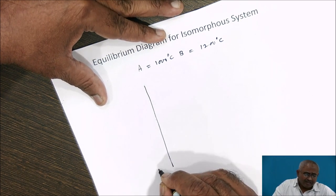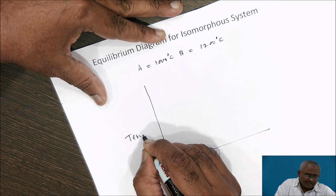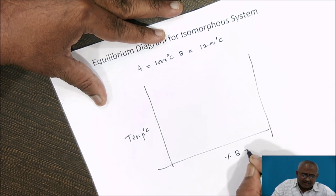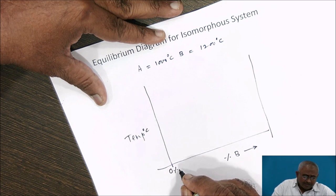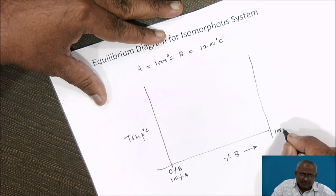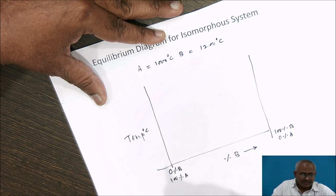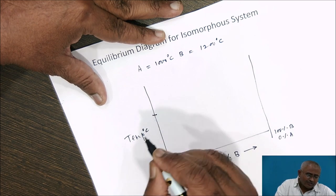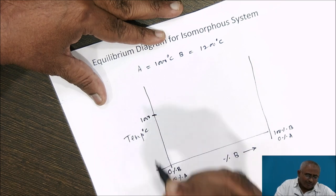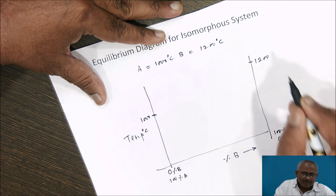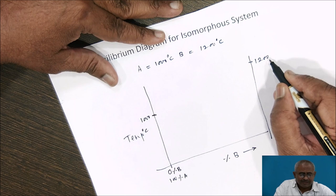To construct the diagram, first of all along the y-axis we take temperature in degrees Celsius, and along the x-axis we write percentage B. On the extreme left it is 0% B, meaning 100% A; at the extreme right it is 100% B, that is 0% A. So the extreme left represents pure metal A and the extreme right represents pure metal B. We mark the melting temperature of metal A at 1000 degrees Celsius, and the melting temperature of pure metal B at 1200 degrees Celsius.